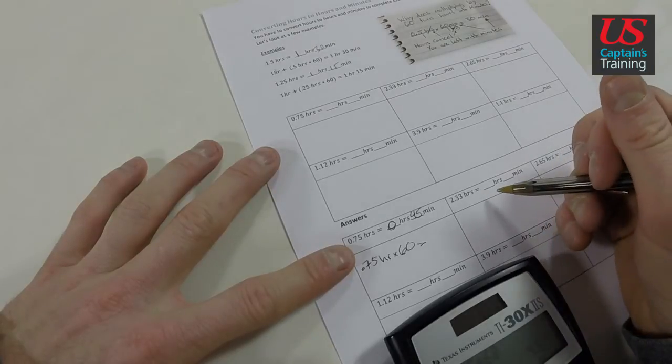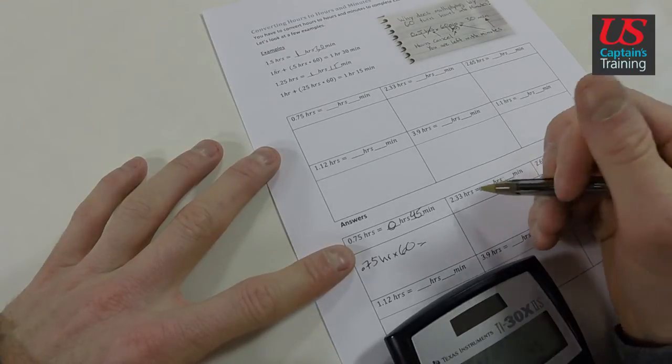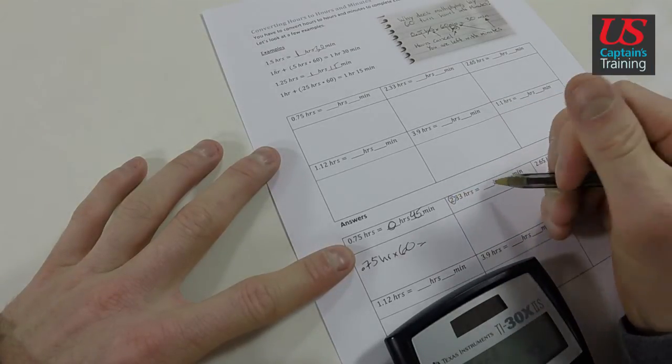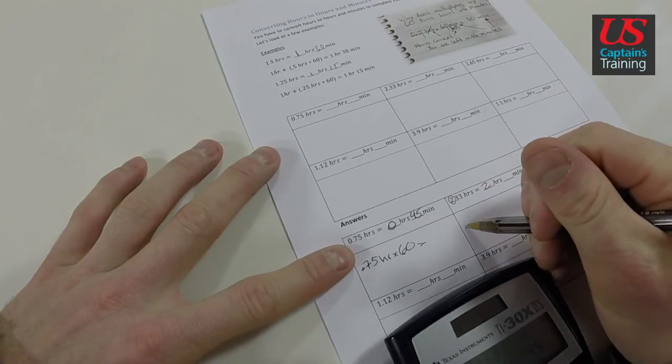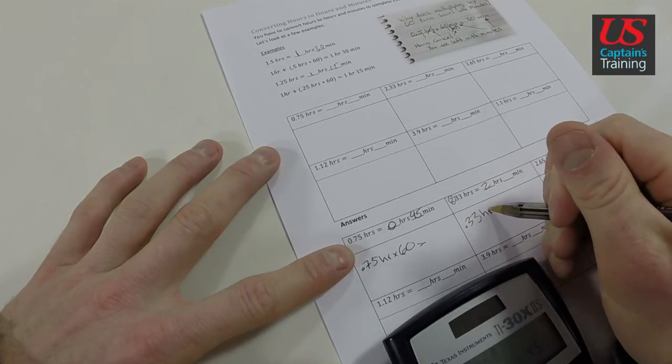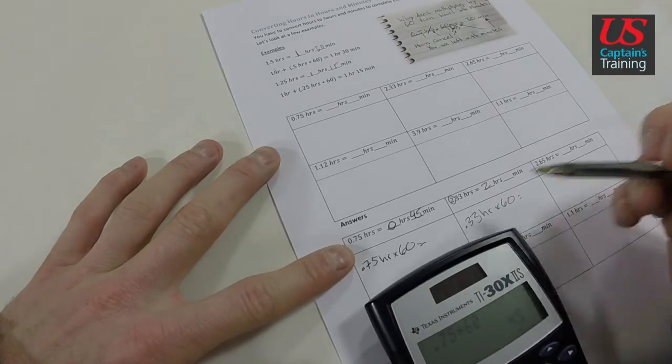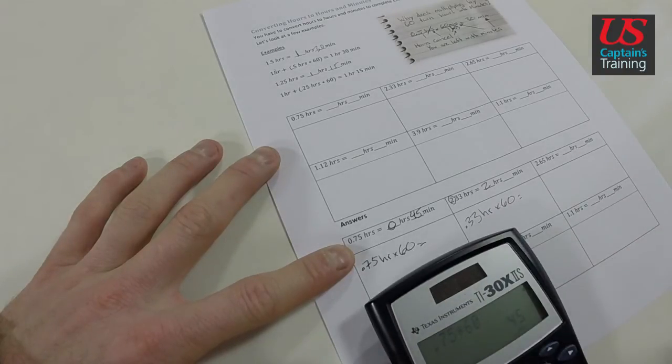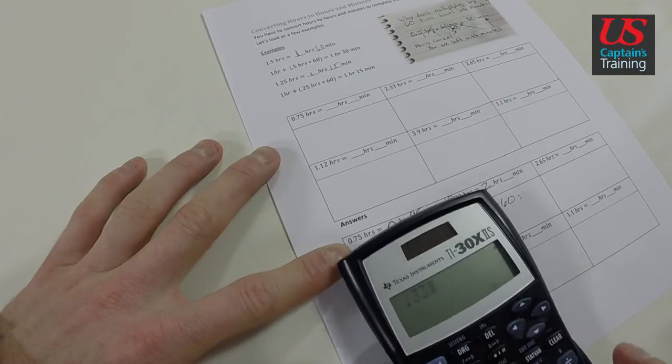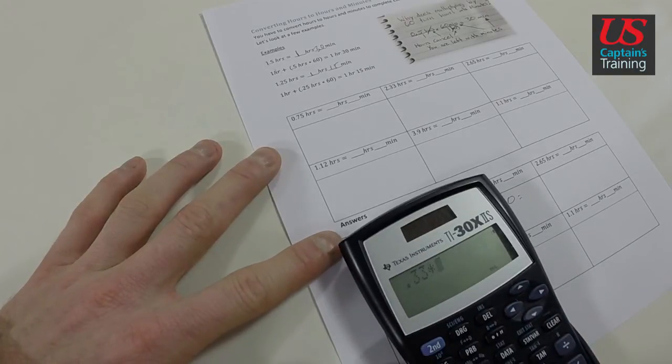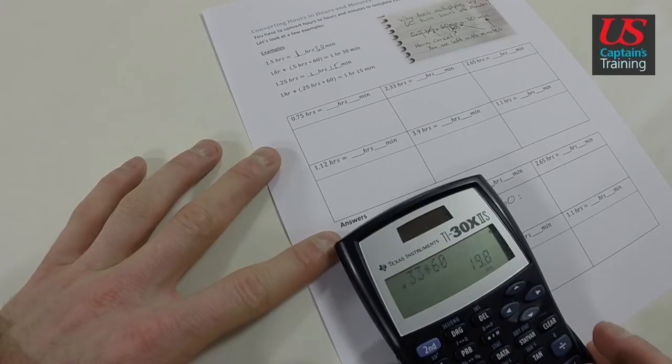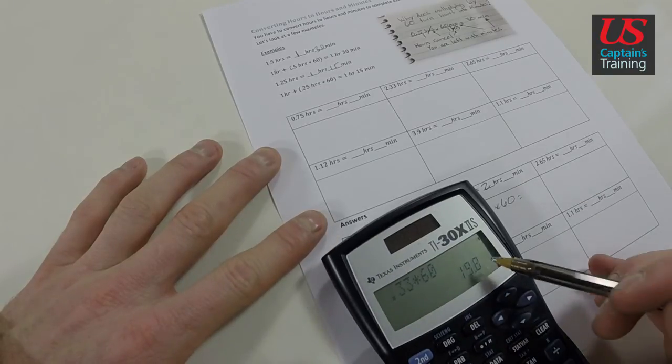The second one: 2.33 hours equals how many hours and how many minutes? We have your full hours here - 2. And now we got 0.33 hours times 60 equals - and this is a third of an hour, it's going to be somewhere around 20 minutes. 0.33 times 60 equals 19.8 minutes.